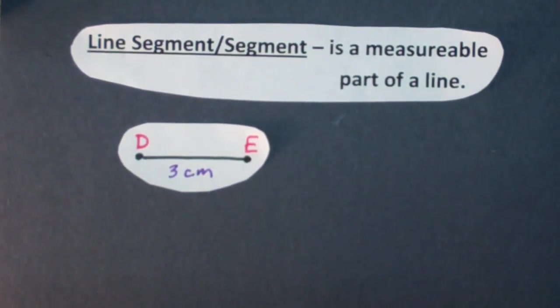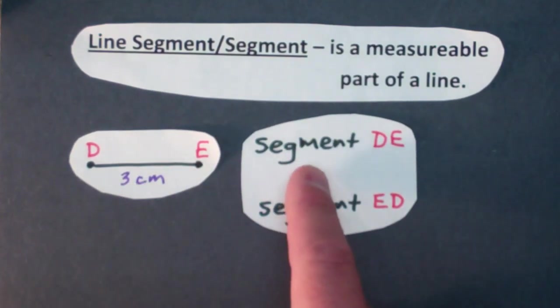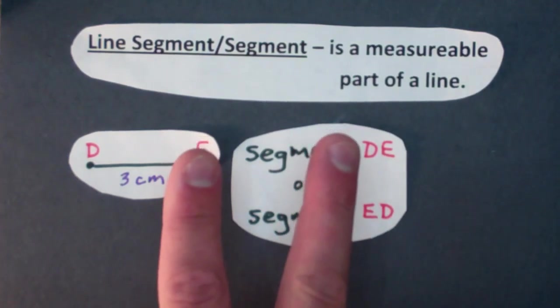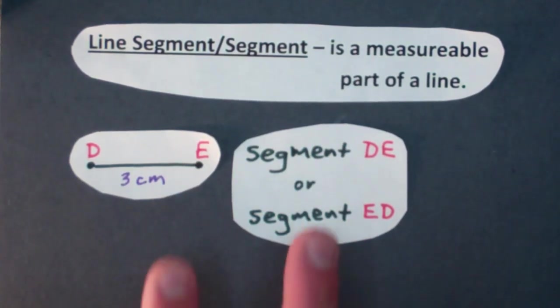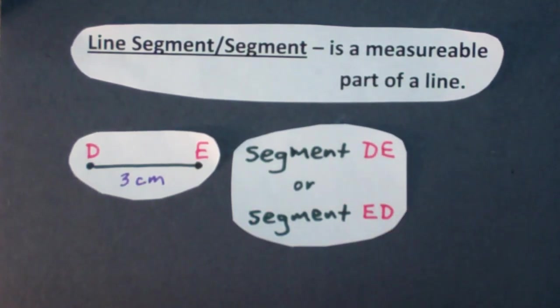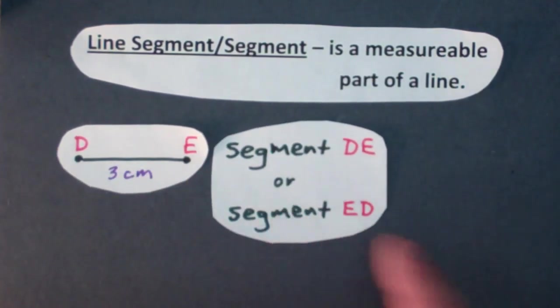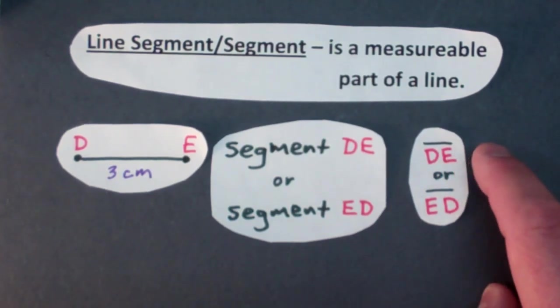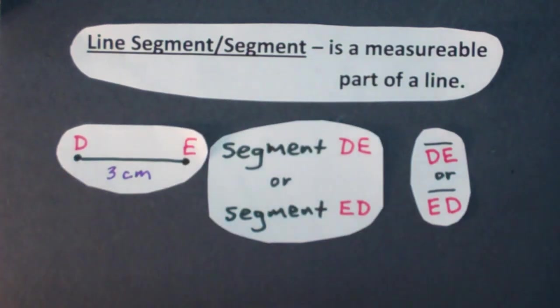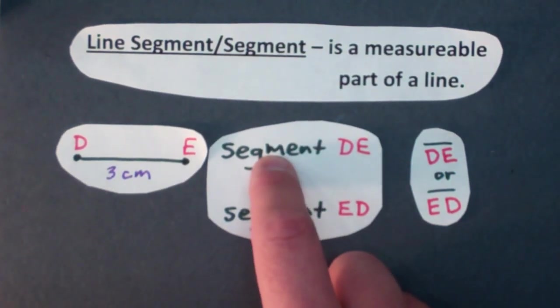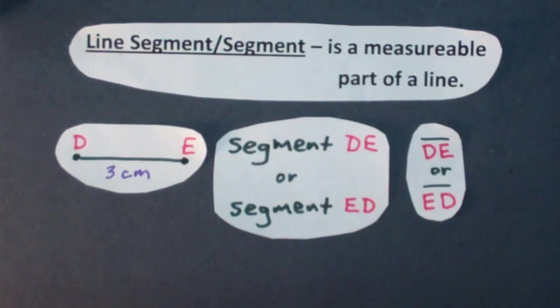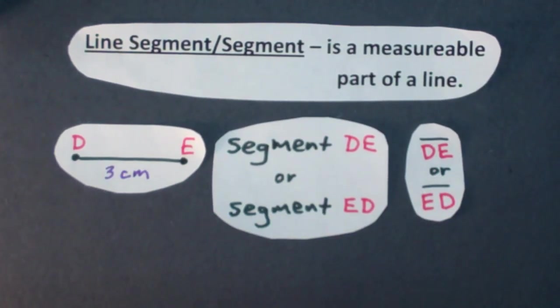So just like for line there's a word you can use, segment. So this is segment DE or segment ED. Again you just need two end points to name the segment and it can be in any order. So I have DE and I have ED. Just like for line there is a symbol for segment. It's just a line and notice there are no arrows here because there are no arrows here. So a couple ways of writing down or seeing segment in a sentence.